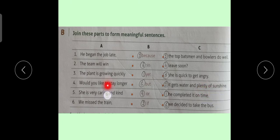Sentence number 4: would you like to stay longer? Preposition or leave soon. Sentence number 5: she is very caring and kind, but she is quick to get angry.